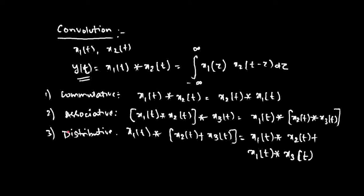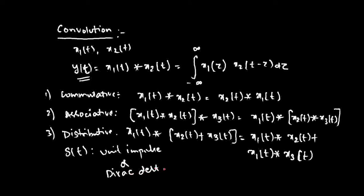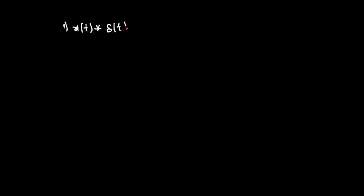Convolution in the discrete domain also satisfies these properties. If you take the convolution of a signal with the unit impulse function — also called the Dirac Delta function, δ(t) — a very important result follows. You will get at least one question on this in your exam. The convolution of a signal x(t) with the impulse function δ(t) results in the same signal x(t).